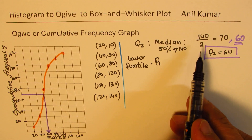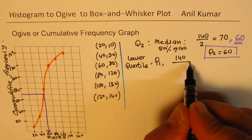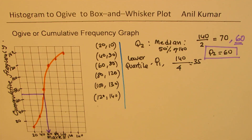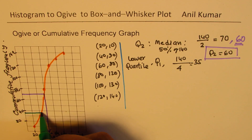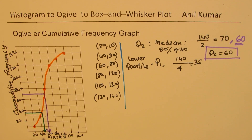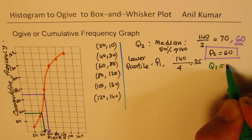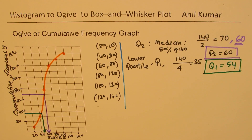For Q1, the lower quartile, that is the 25th percentile. We divide 140 by 4 to get 35. We look for the position of 35 on the cumulative frequency graph. Reading across at 35, it appears slightly less than 50, so Q1 is approximately 44. That is our lower quartile.